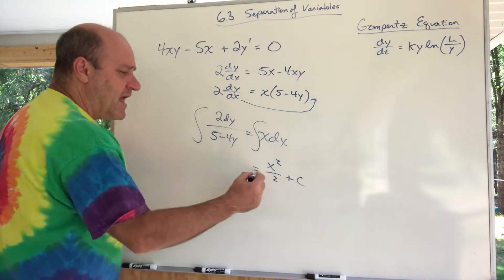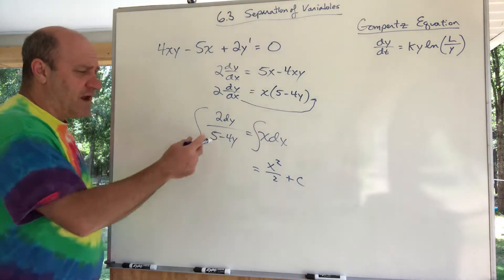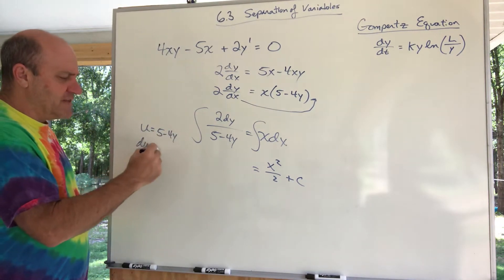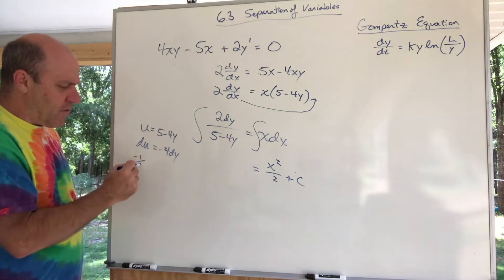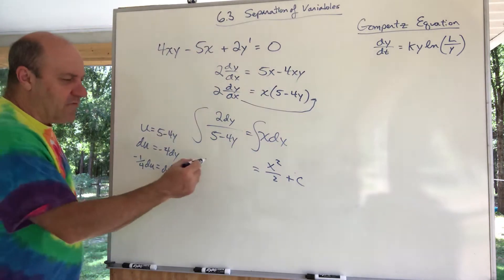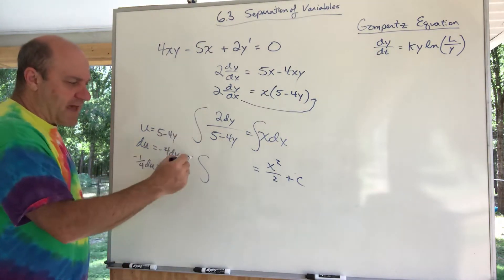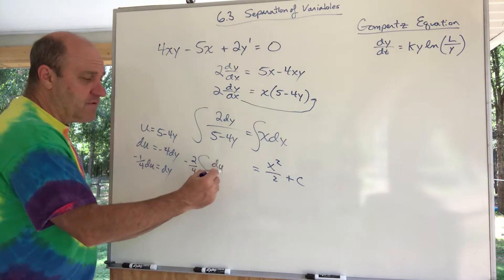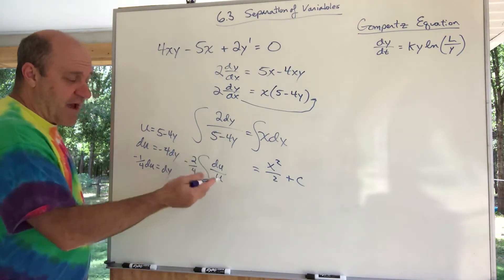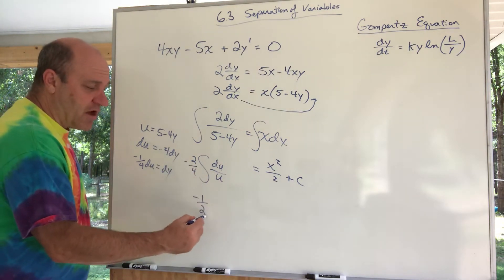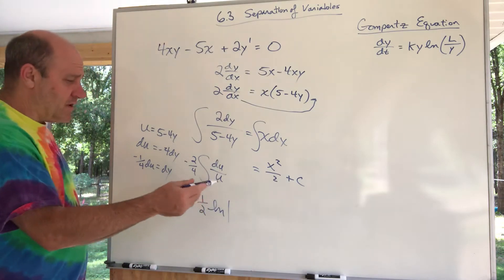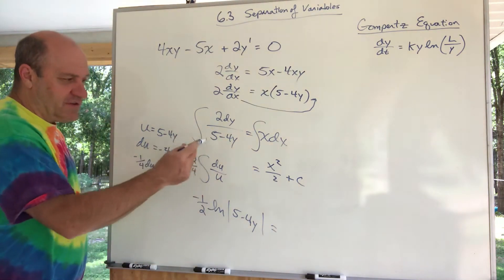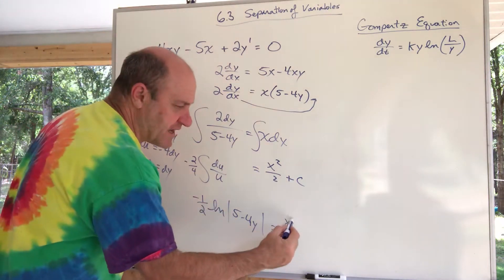On the left side, it's a little u-substitution. Let u equal the denominator (5 minus 4y). Then du equals negative 4 dy, so negative 1/4 du equals dy. When I rewrite this integral, the 2 comes out front and I replace dy with negative 1/4 du, giving negative 1/4 du over u. Integrating that gives negative 1/2 ln|u|, which is negative 1/2 ln|5 minus 4y|. So after the u-substitution natural log integral, we have negative 1/2 ln(5 minus 4y) equals x squared over 2 plus C.